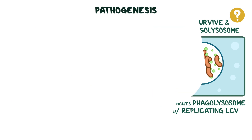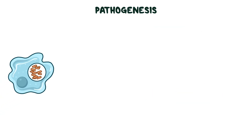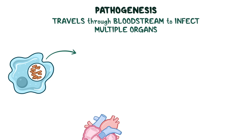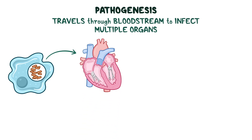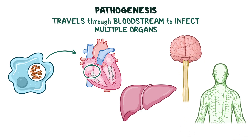This ability to survive and replicate inside macrophages allows it to travel through the bloodstream to infect multiple organs, such as the heart — especially the valves — liver, central nervous system, lymph nodes, and others.